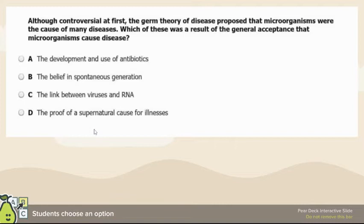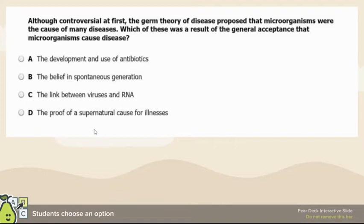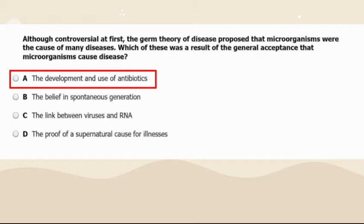Germ theory of disease — which of these results from the general acceptance that microorganisms cause disease? Spontaneous generation and supernatural causes don't make sense. The link between viruses and RNA is not the direct result. The correct answer is the development and use of antibiotics, because the first thought would be: how can we prevent diseases and people getting sick?